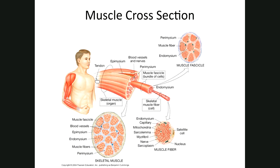This is the reason skeletal muscles are multinucleate — when myoblasts join together, each one brings a nucleus with it, so the resulting cell has many nuclei. Skeletal muscle cells, called myofibers, are long, cylindrical, multinucleated, striated cells that lay parallel to one another.